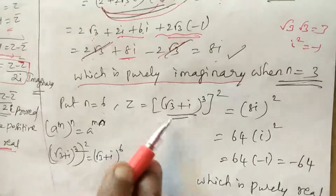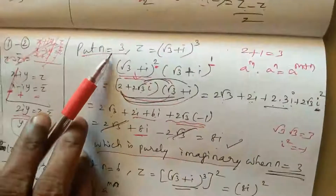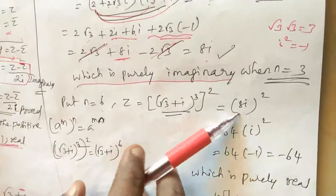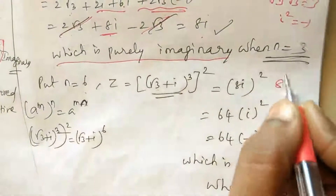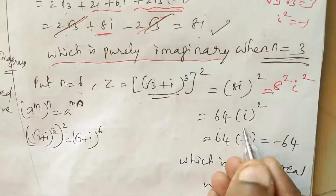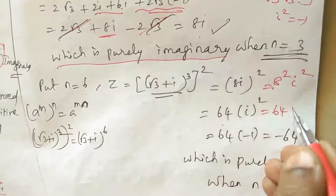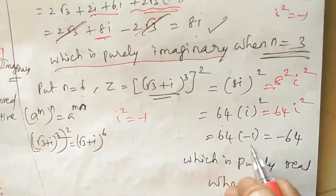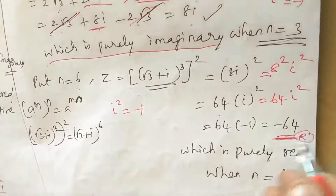For the purely real case, we use n equals 6. We write (√3 plus i)^6 as ((√3 plus i)^3)^2, which equals (8i)^2 equals 8 squared times i squared equals 64 times minus 1 equals minus 64. This is purely real. Therefore n equals 6 is the least positive integer for which (√3 plus i)^n is purely real.